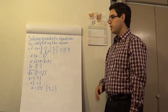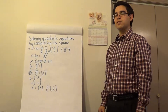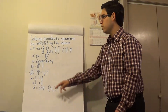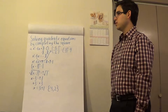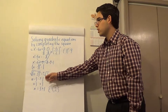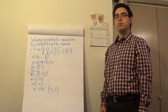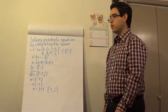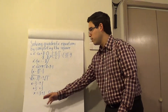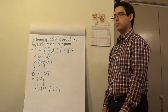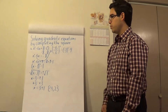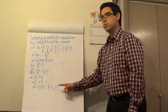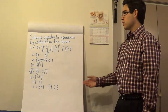Now to solve for x, you're going to want to take the square root of both sides of the equation. So you'll have the square root of x minus 3 squared equal to plus or minus the square root of 1. This is equivalent to x minus 3 is equal to plus or minus 1. To solve for x, add 3 to both sides: x is equal to 3 plus or minus 1. So your two solutions are x equals 3 plus 1, which is 4, and 3 minus 1, which is 2.